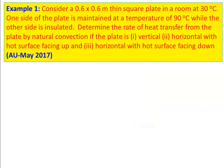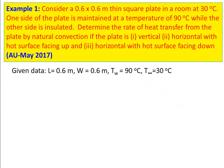Example number 1: Consider a 0.6 by 0.6 meter thin square plate in a room at 30°C. One side of the plate is maintained at 90°C while the other side is insulated. Determine the rate of heat transfer from the plate by natural convection if the plate is: (1) vertical, (2) horizontal with the hot surface facing up, and (3) horizontal with the hot surface facing down. Given data: L = 0.6 m, W = 0.6 m, Tw = 90°C, T∞ = 30°C.